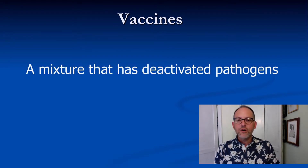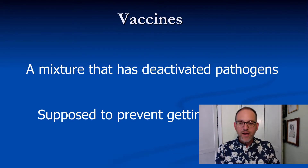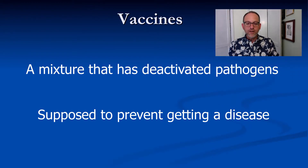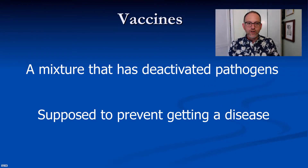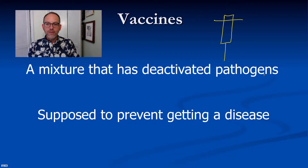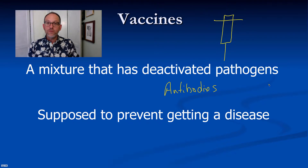A vaccine is a mixture that has deactivated pathogens and is supposed to prevent you from getting a disease. You get that shot every year — it injects those pathogens into you, and they force your body to make antibodies so you have the ability to fight off the disease before you even get sick. It's kind of like building up the army before you have to go into battle.